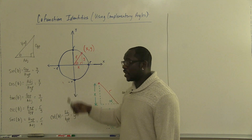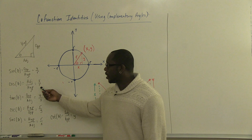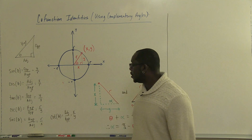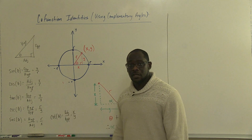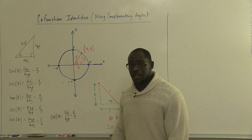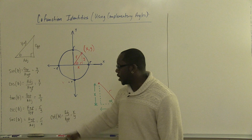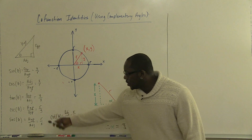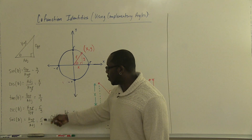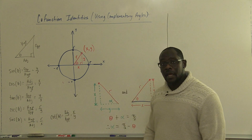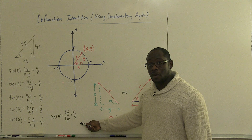If we do the adjacent side divided by the hypotenuse, we have cosine theta. If we do the opposite side divided by the adjacent side, we have tangent. For cosecant, that is just the reciprocal of sine, so we flip sine and have r over y. Secant is the reciprocal of cosine, so instead of x over r, we have r over x. And lastly, cotangent is the reciprocal of tangent, so instead of y over x, we have x over y.